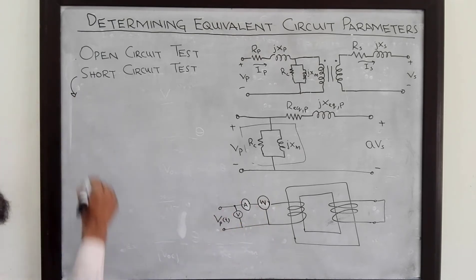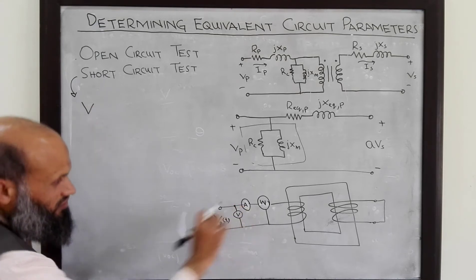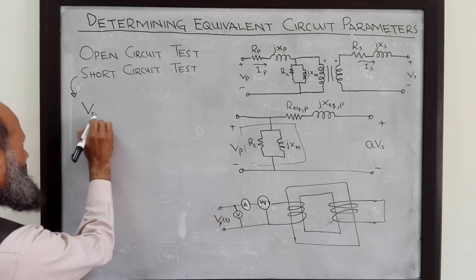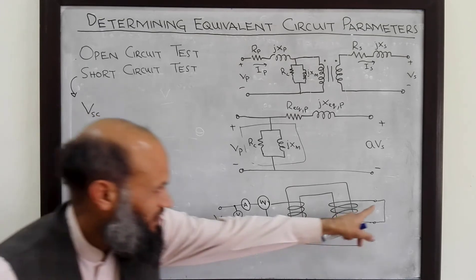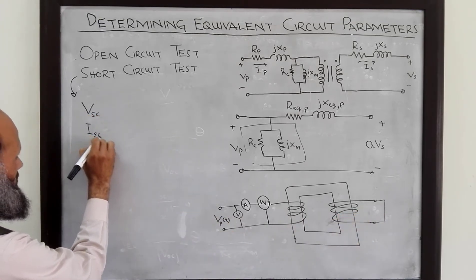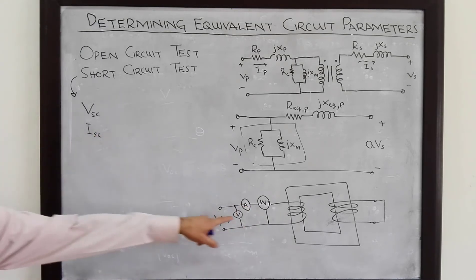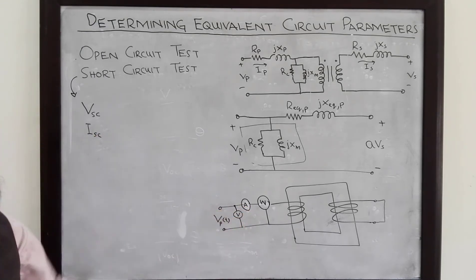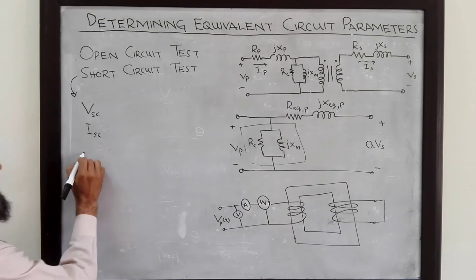Rated current is the current for which the transformer is designed. We gradually increase the applied voltage until rated current flows. Again, we measure all quantities: the voltage — now called the short circuit voltage — and the current measured by the ammeter. The voltmeter and ammeter again only measure magnitudes, not phase angles.